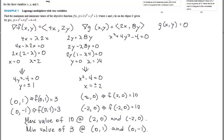In summary, what I have is a maximum value for this particular objective function with the given constraints. I would get a maximum value of 10 at the points (2, 0) and (-2, 0), and I would get a minimum value of 3 at the points (0, 1) and (0, -1).